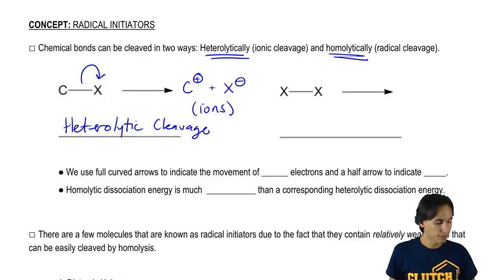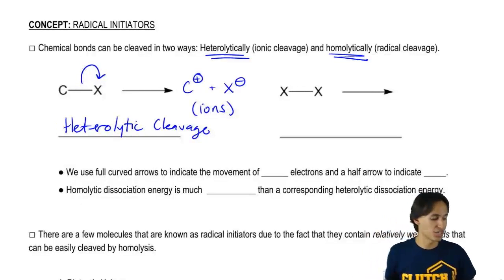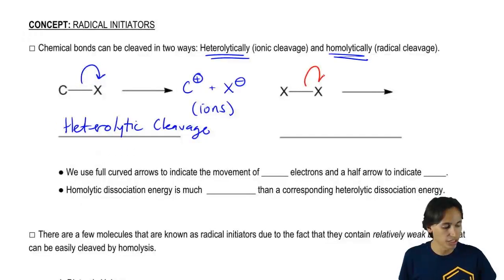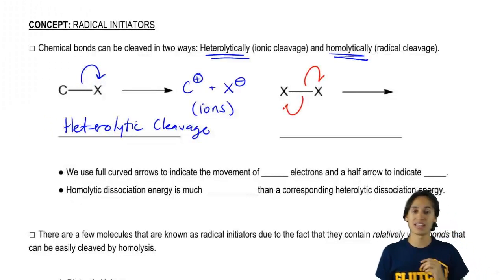But another way to break them is that I could break them just taking one electron from each side. So I could take one electron and give it to that X. I could take another electron and give it to that X.